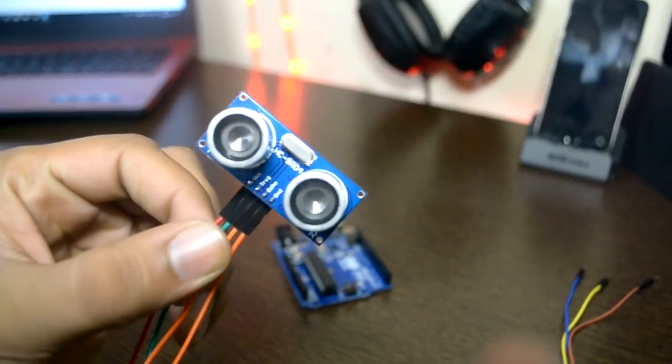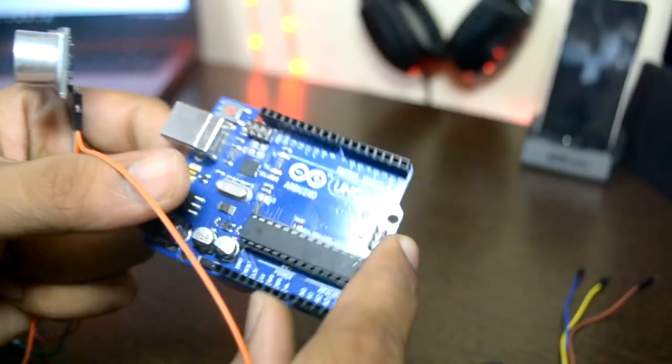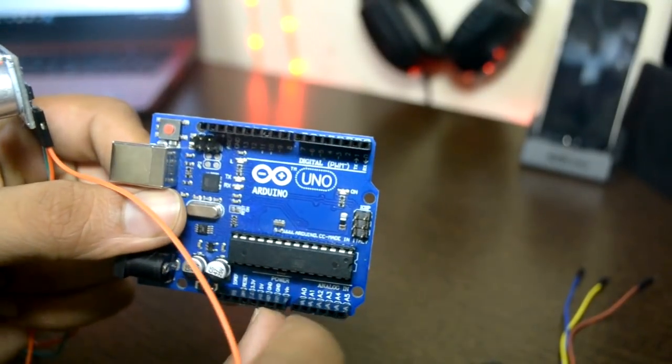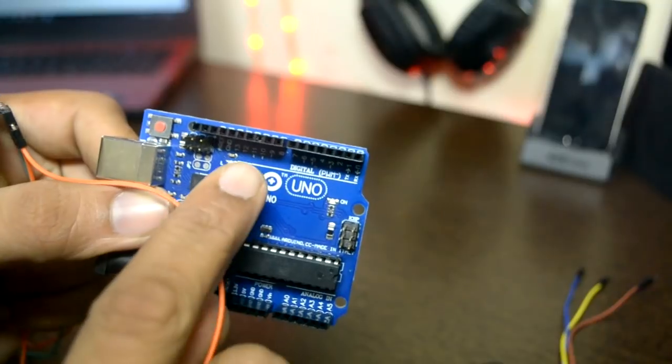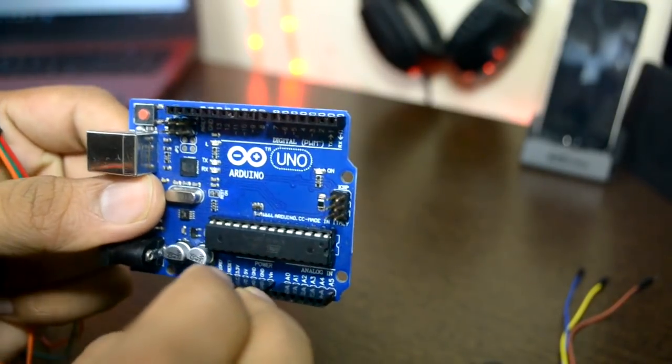The ground wire of our ultrasonic module is simply our Arduino. We can insert it in the ground port. You can see here there are two ground ports. I will insert it. Boom.